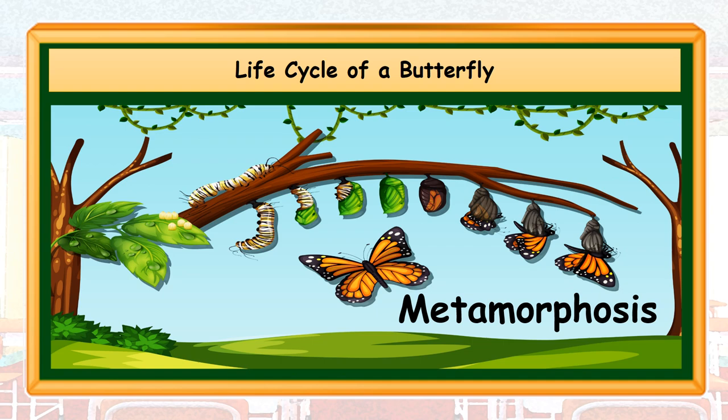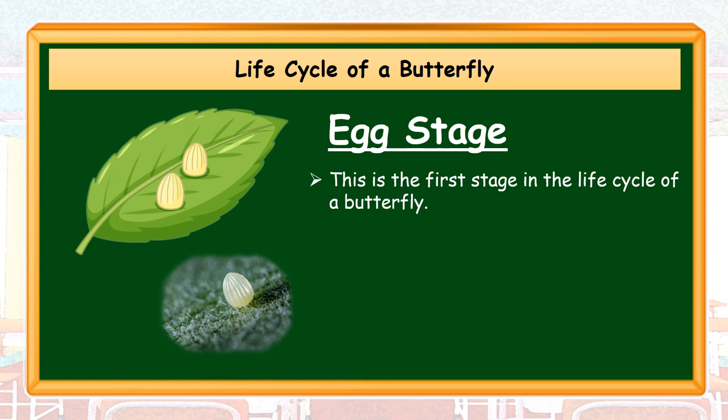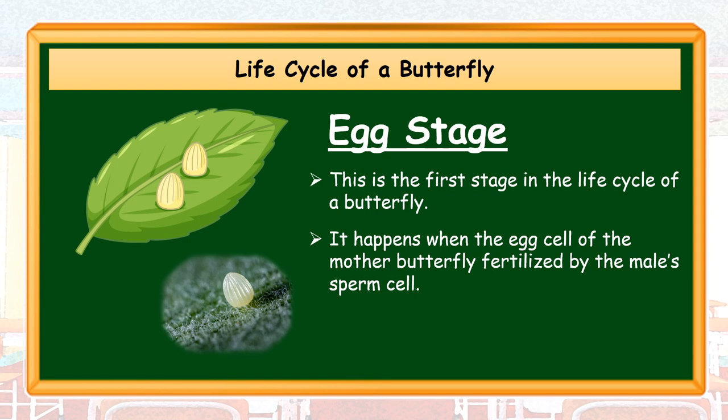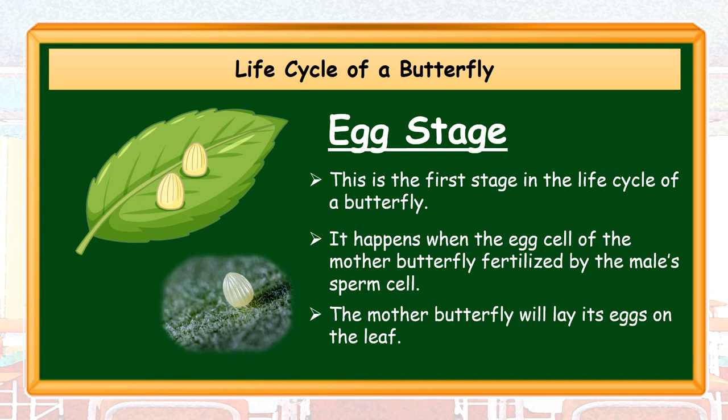Let's find out! Egg Stage. This is the first stage in the life cycle of a butterfly. It happens when the egg cell of the mother butterfly is fertilized by the male sperm cell. When the egg cell is fertilized, the mother butterfly will lay its eggs on a leaf.